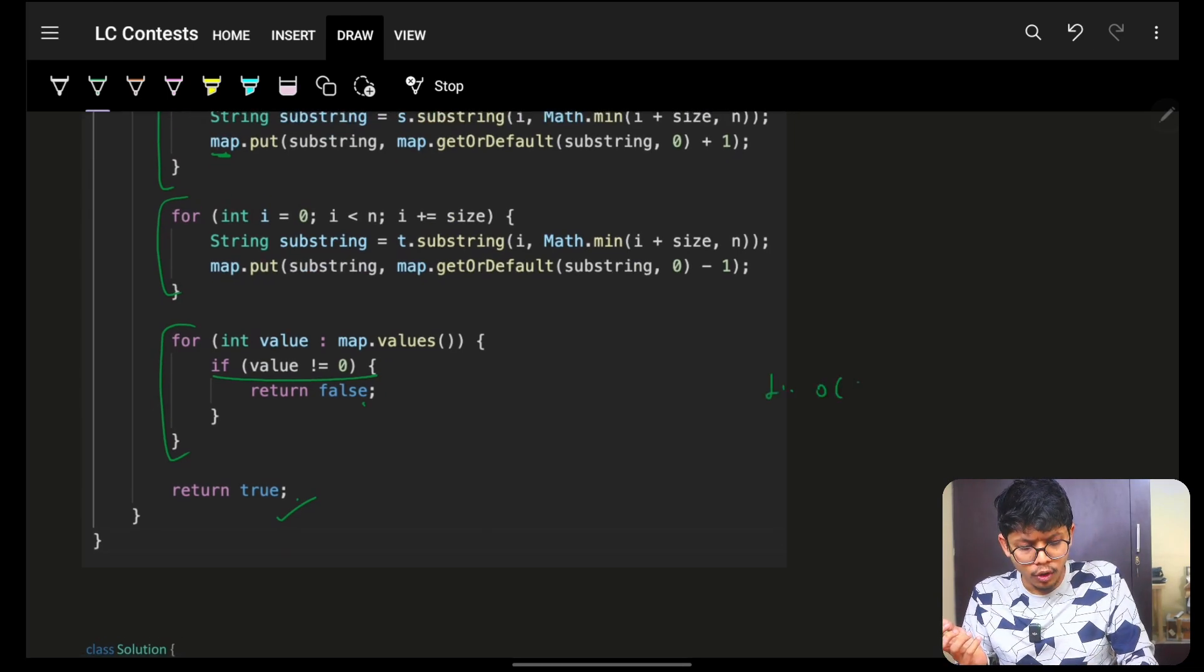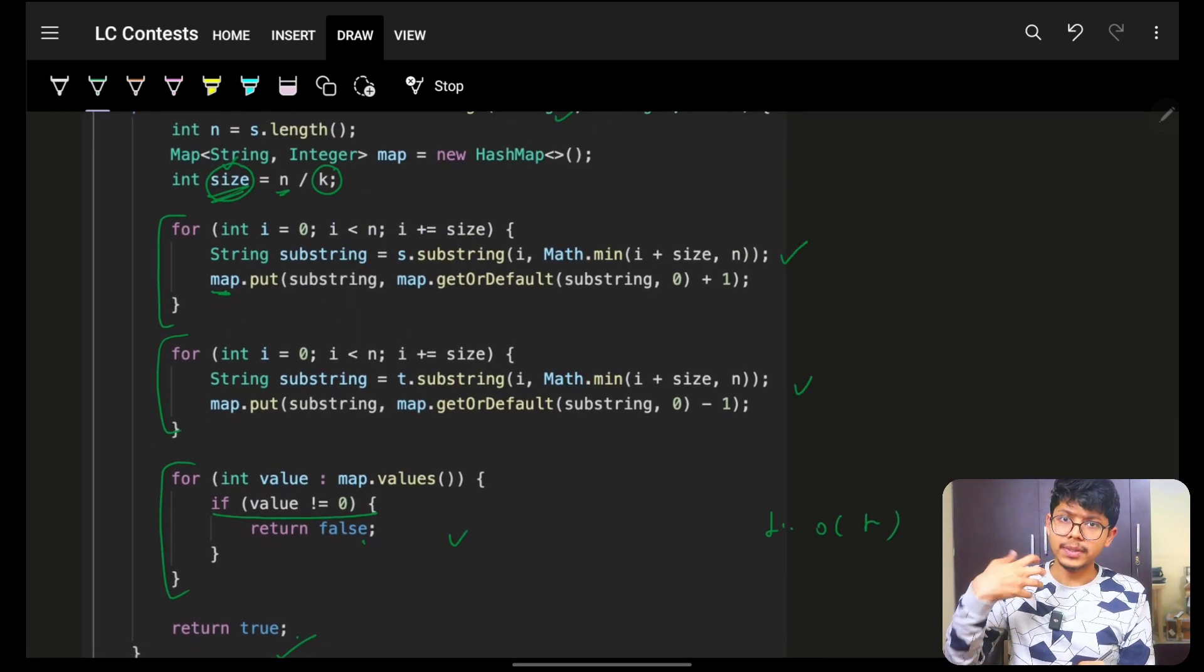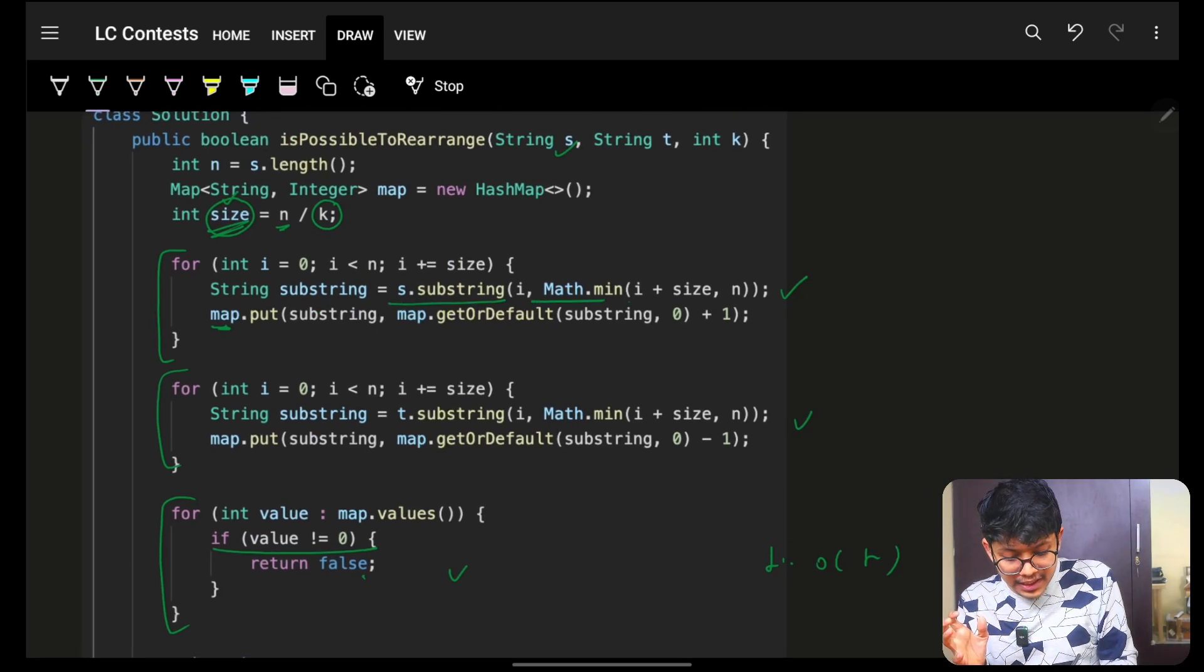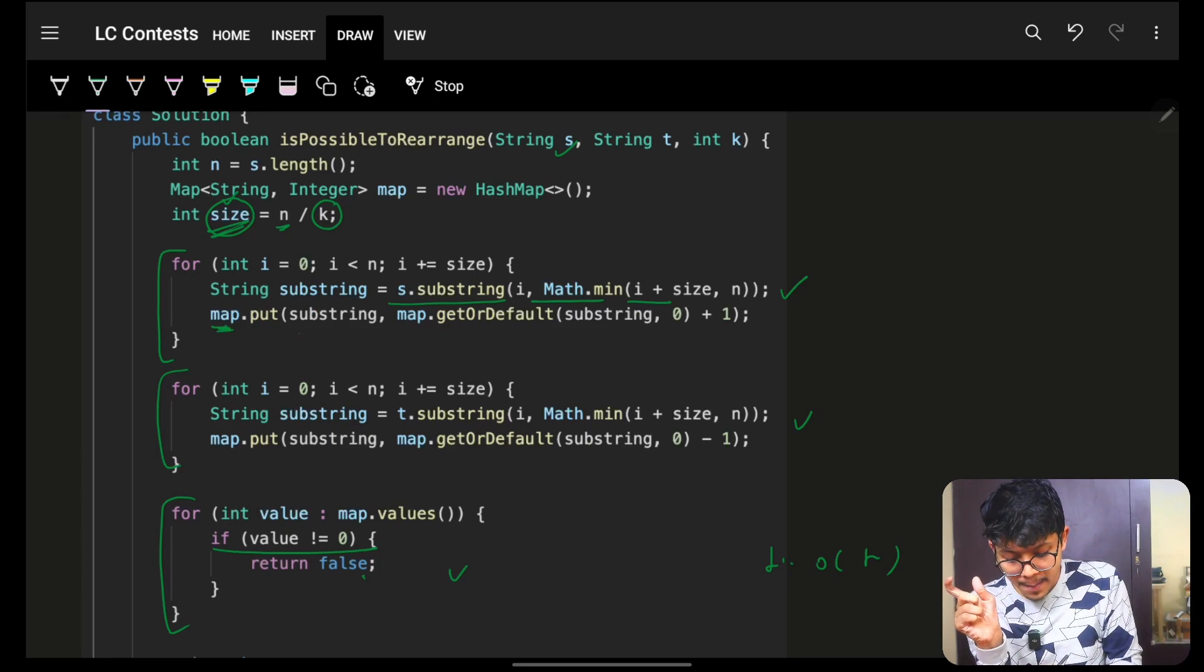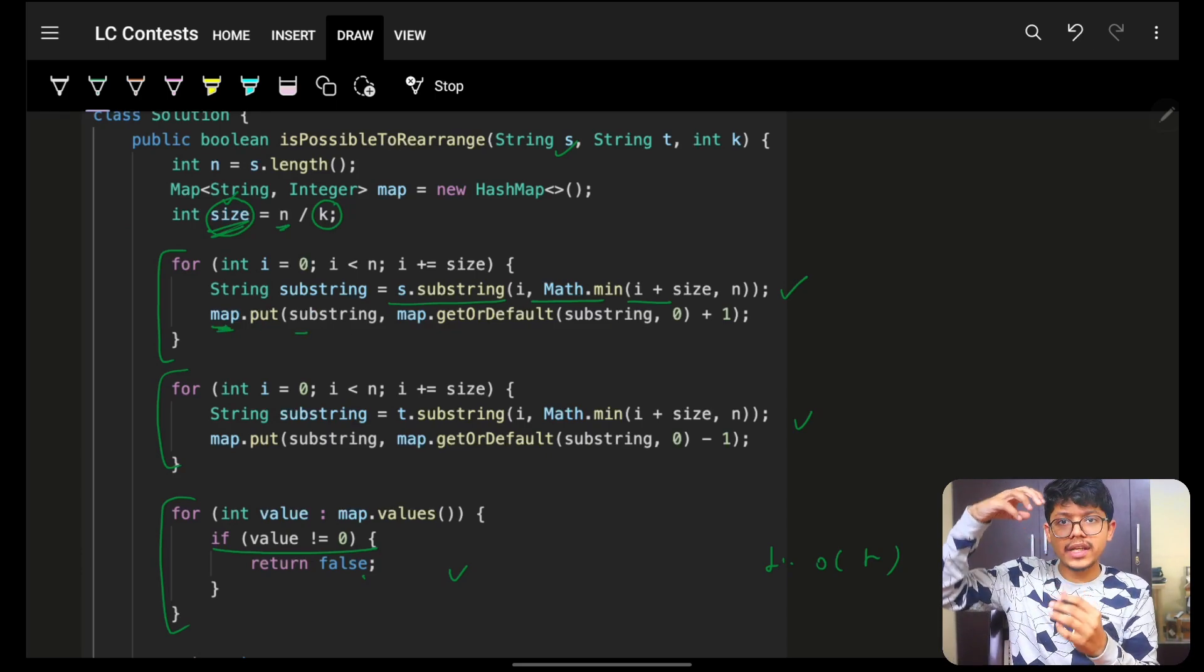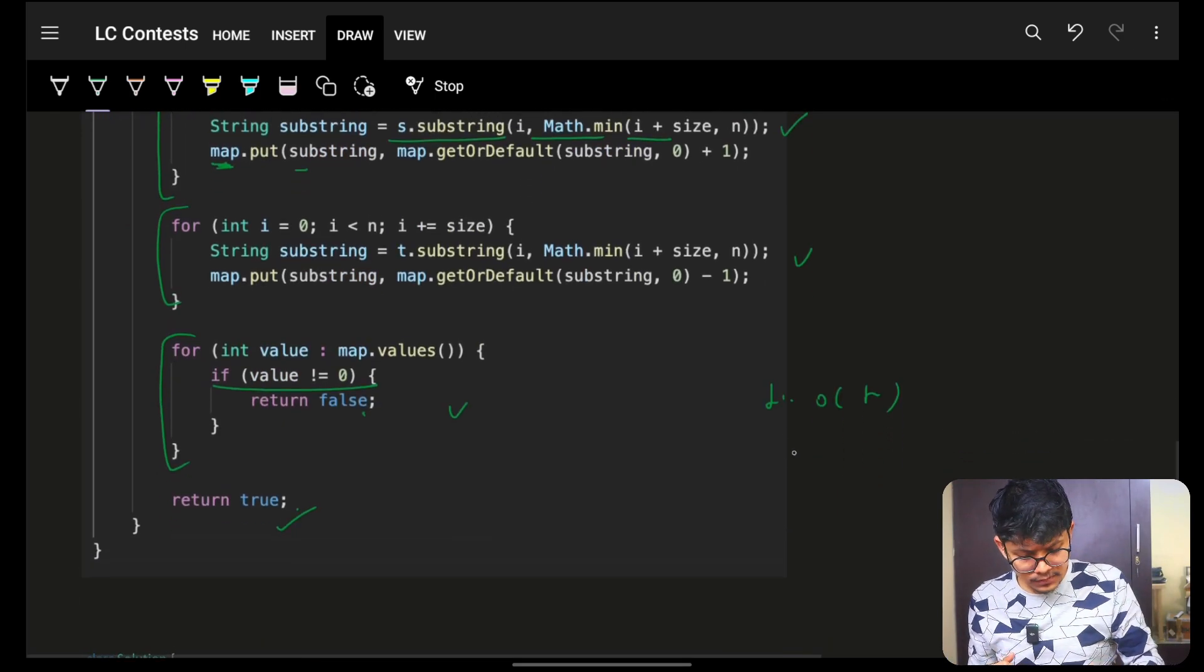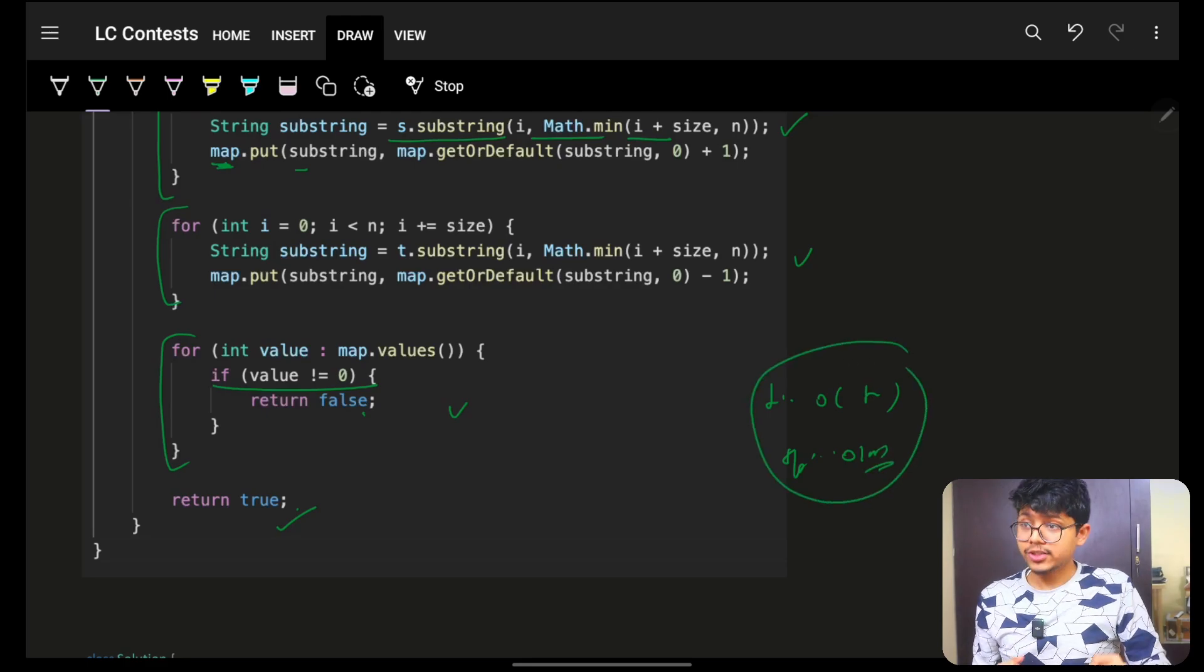And thus, time simply will be O of N. Again, considering my string is of length N because this is N, O of N. And ultimately, this also will be O of N because you are ultimately, again, see, you are simply iterating on that specific string. Every substring will be there. So, hash map in total will contain substrings, but those substrings in total are having a size of O of N. And thus, space will also be O of N for us. Cool. This is your time and space.